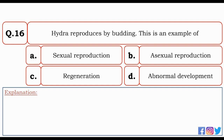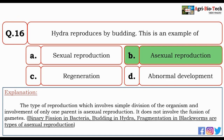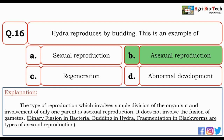Hydra reproduces by budding. This is an example of — sexual reproduction, asexual reproduction, regeneration, or abnormal development? The correct answer is B — asexual reproduction. The type of reproduction which involves simple division of the organism with involvement of only one parent is asexual reproduction. It does not involve fusion of gametes. Binary fission in bacteria, budding in Hydra, and fragmentation in blackworms are all types of asexual reproduction.